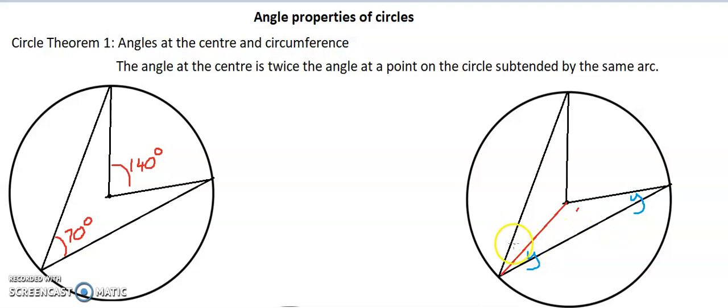I'm also going to mark this angle here as x, which means we know this angle here is x. And I will label this angle here as a and this angle here is b.